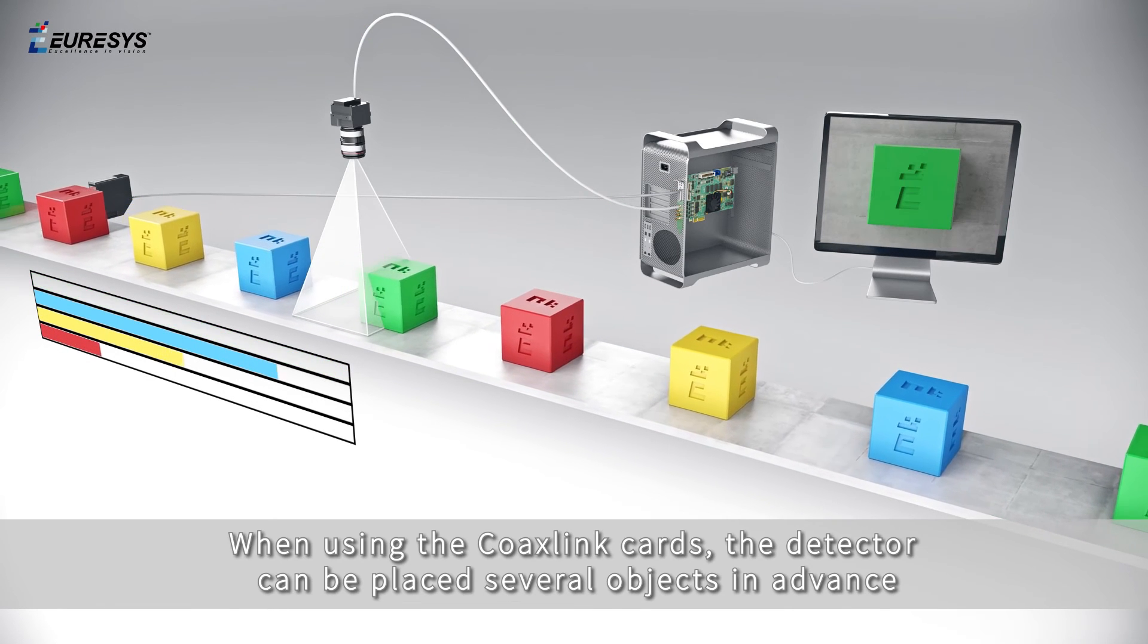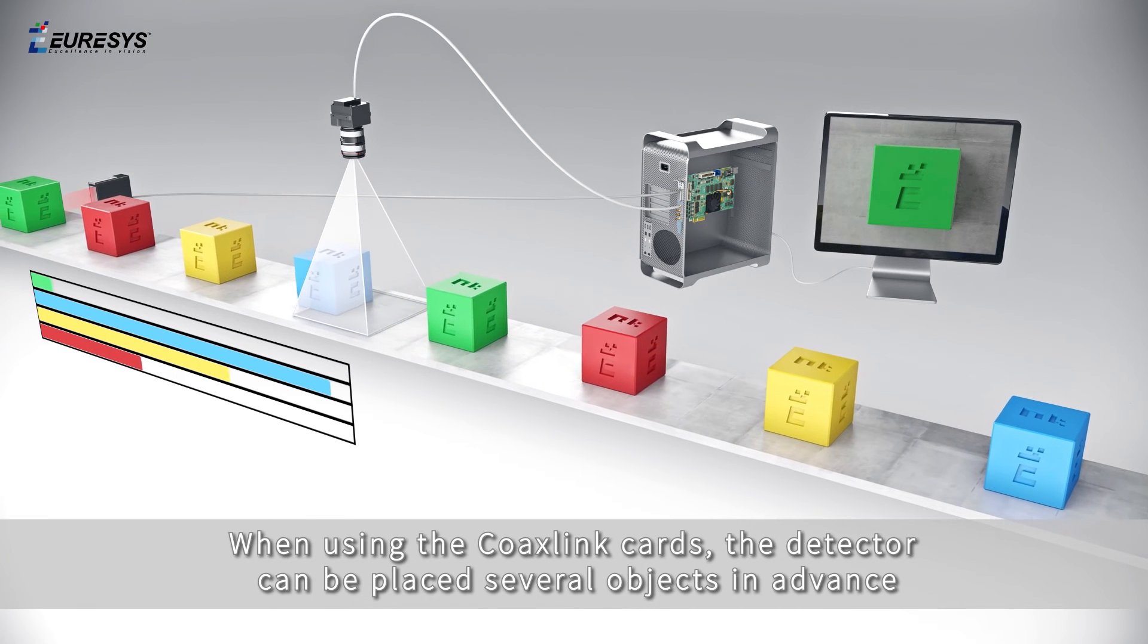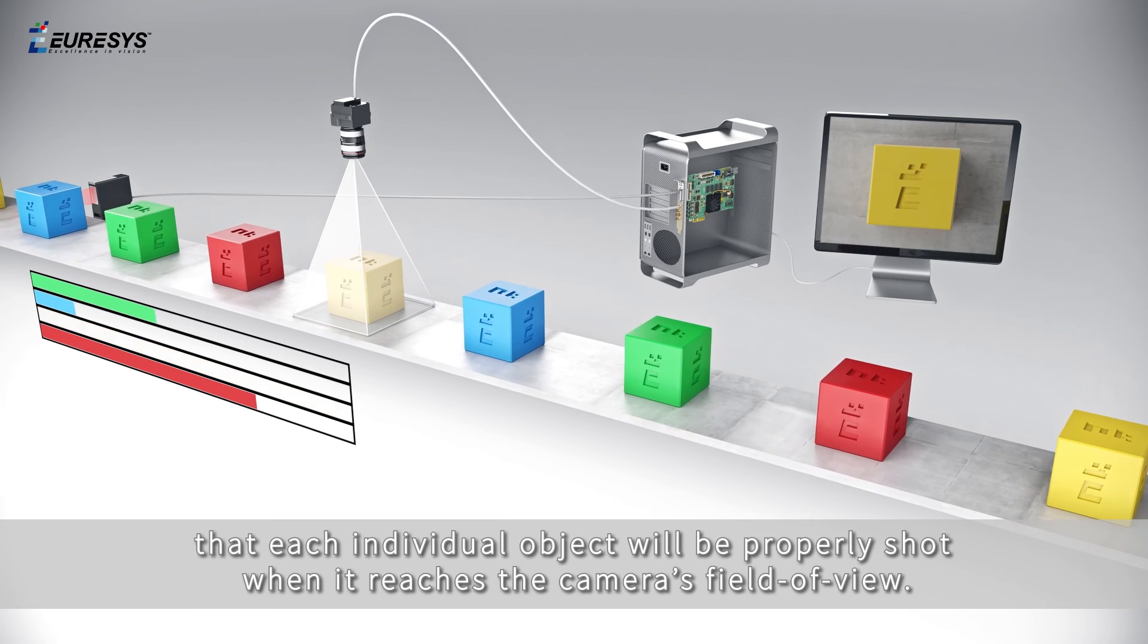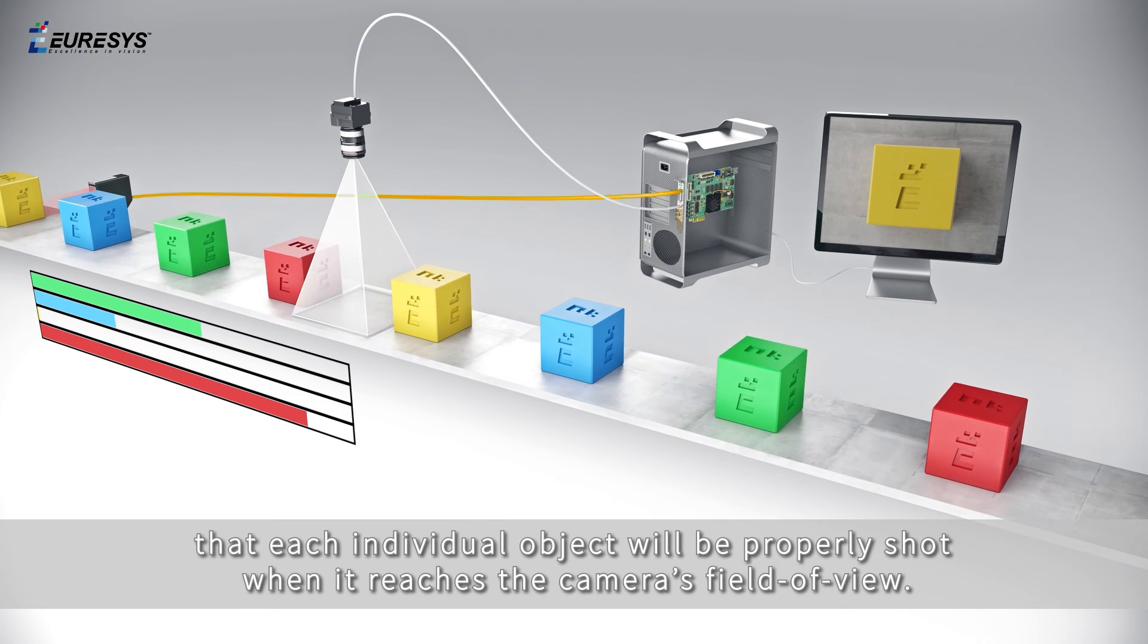When using the coax link cards, the detector can be placed several objects in advance. The pipelined architecture of the delay tool ensures that each individual object will be properly shot when it reaches the camera's field of view.